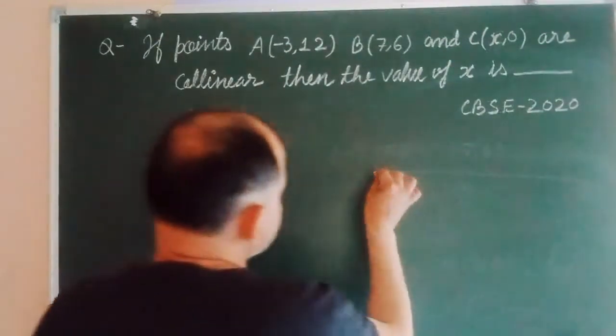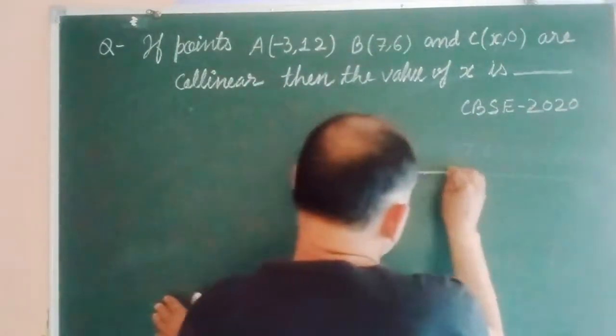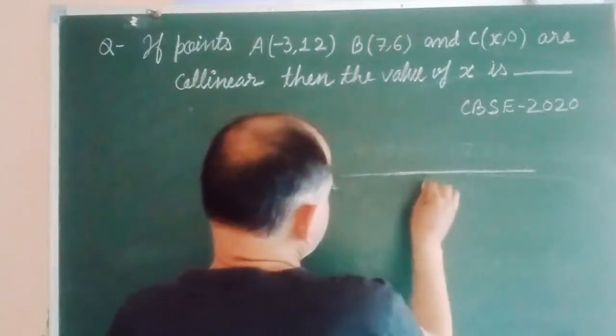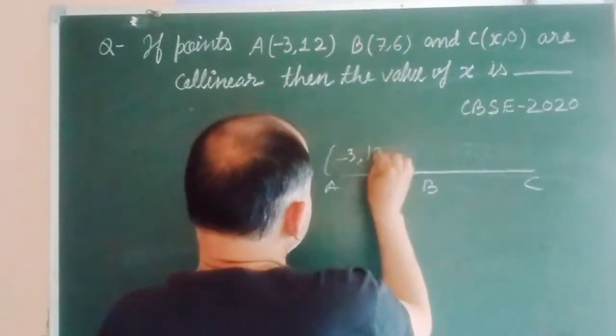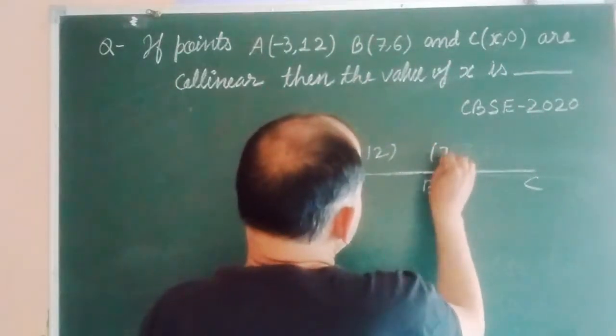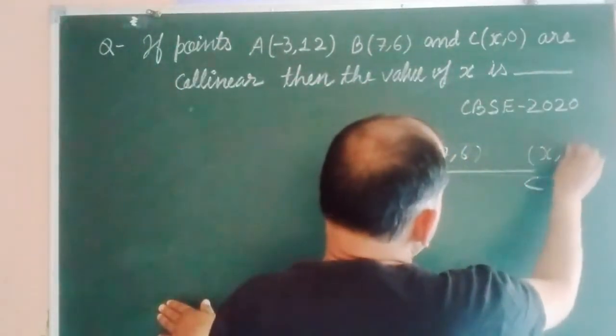So let these three points are in a straight line: A(-3,12), B(7,6) and C(x,0).